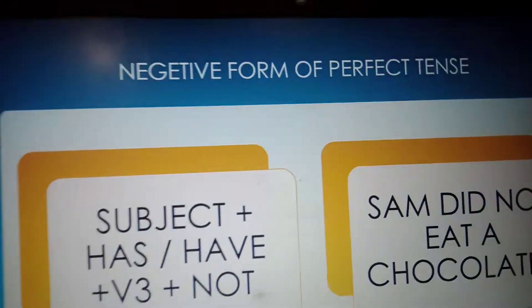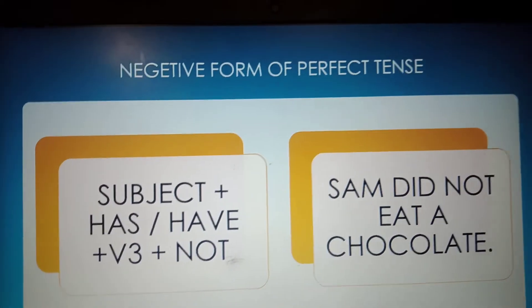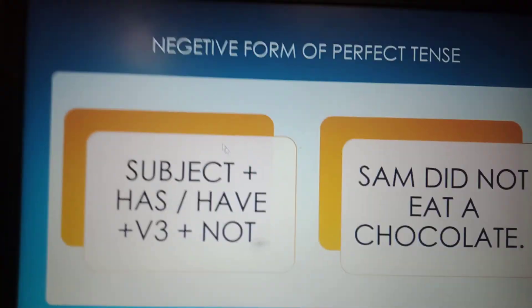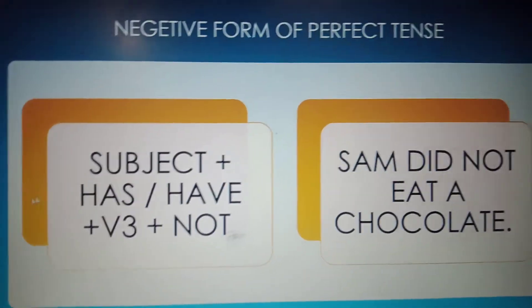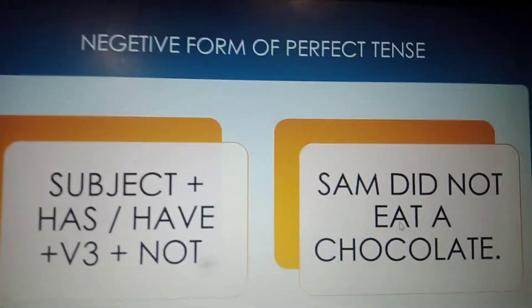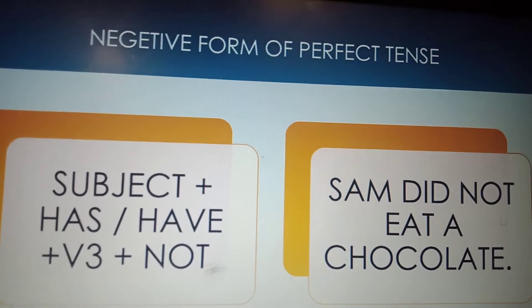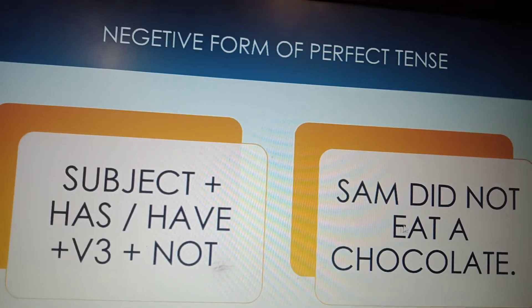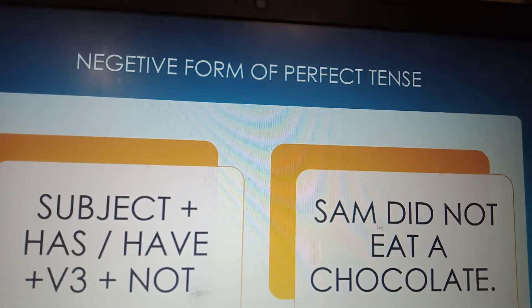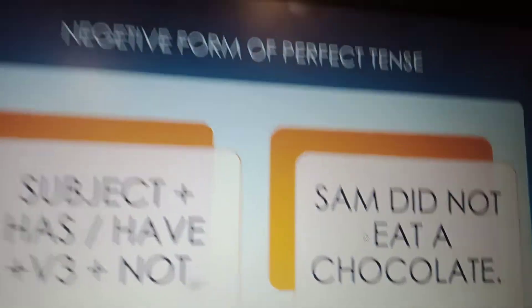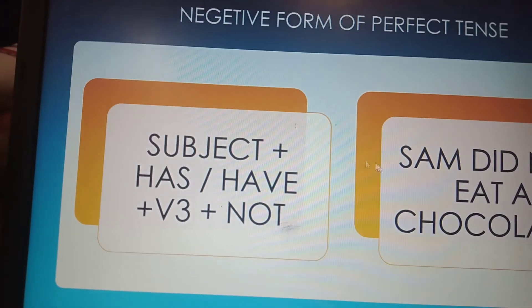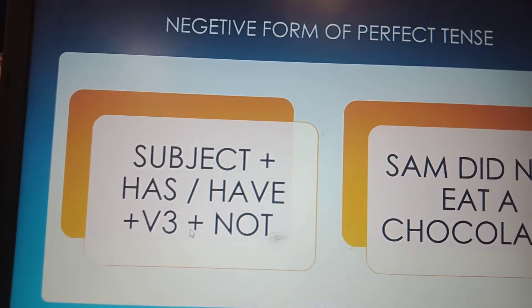In the negative form: Subject + has/have + not + V3. For example, 'Sam did not eat a chocolate.' We add 'not' after has/have, and the verb remains in V3 form. It is important to always keep V3 in perfect tense sentences.